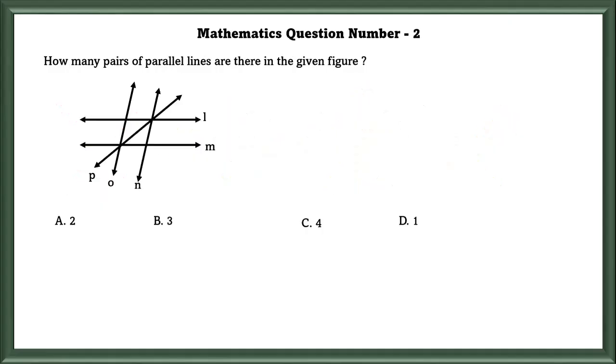Mathematics Question No. 2: How many pairs of parallel lines are there in the given figure? O and N are one pair of parallel lines. L and M are another pair of parallel lines. So our answer is two pairs of parallel lines.